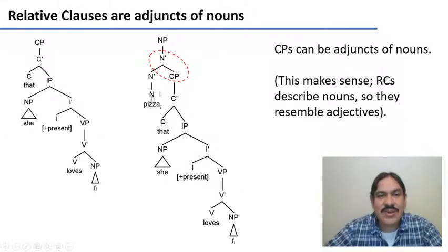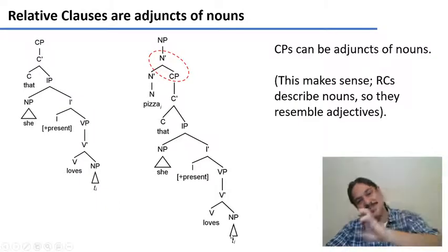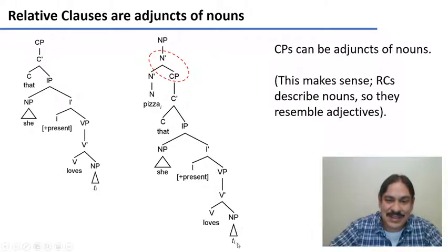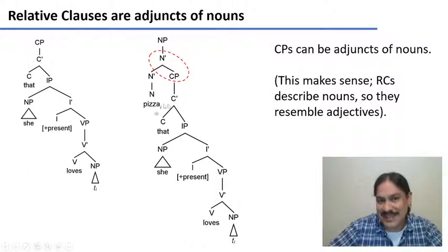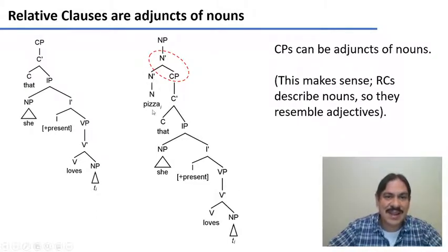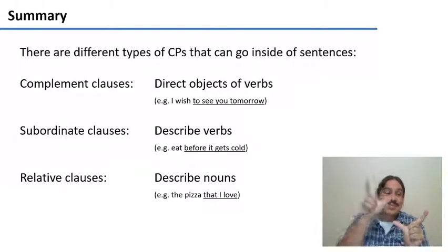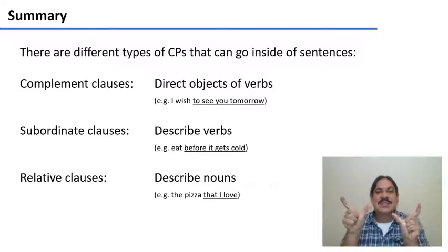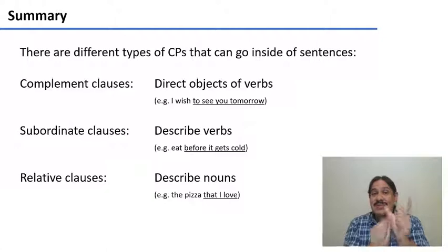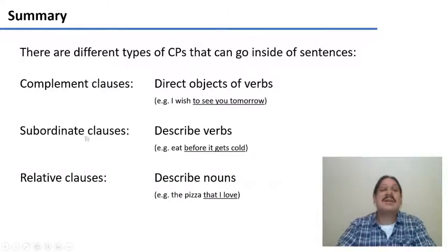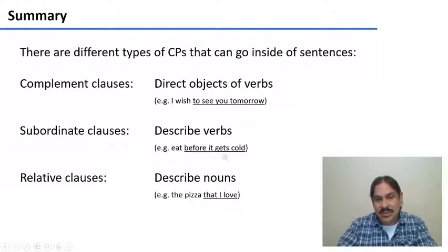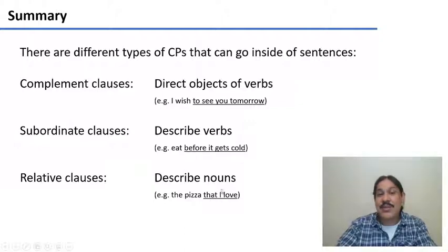So we can have different types of CPs that contain full sentences and can be inserted into other sentences, with different functions. Some of them are complement clauses, which are direct objects of verbs — like in 'I wish to see you tomorrow': what do you wish? To see you tomorrow. Subordinate clauses are CPs that describe verbs — 'I'm going to eat before it gets cold': how are you going to eat it? Before it gets cold. Relative clauses are clauses that describe nouns — as in 'the pizza that I love.'